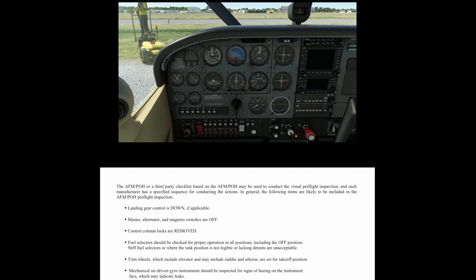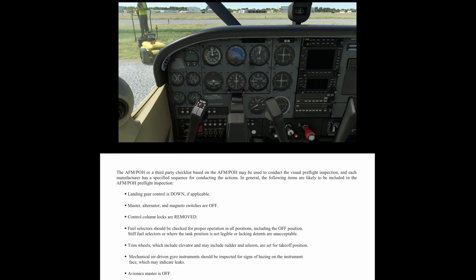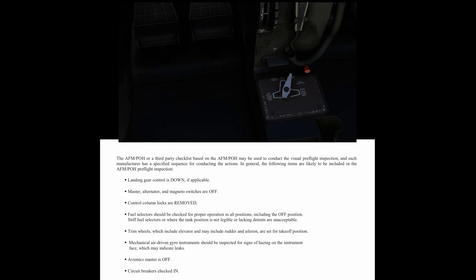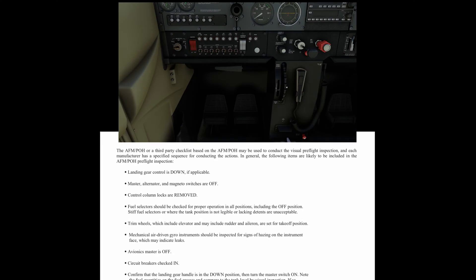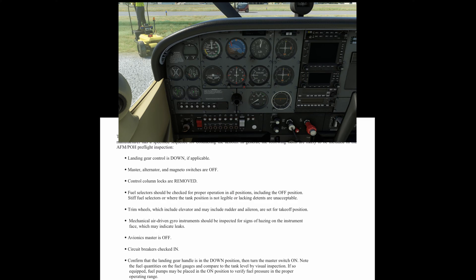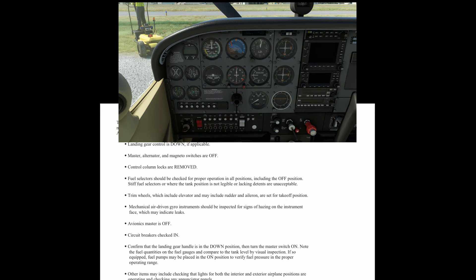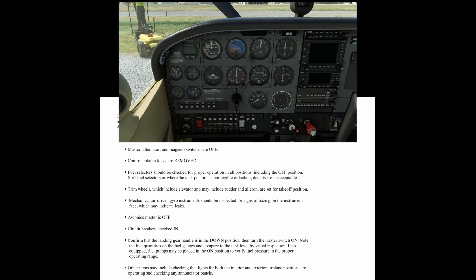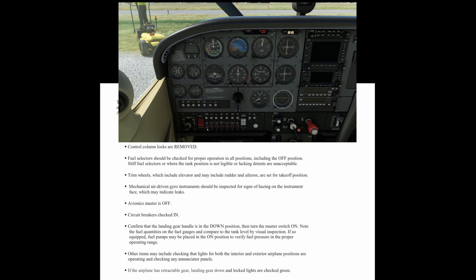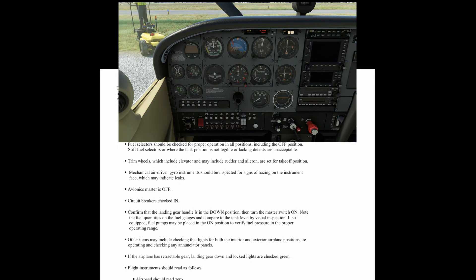In general, the following items are likely to be included in the AFM/POH pre-flight inspection: Landing gear control is down, if applicable. Master, alternator, and magneto switches are off. Control column locks are removed. Fuel selectors should be checked for proper operation in all positions, including the off position. Stiff fuel selectors, or where the tank position is not legible or lacking detents, are unacceptable. Trim wheels, which include elevator and may include rudder and aileron, are set for take-off position. Mechanical, air-driven gyro systems should be inspected for signs of hazing on the instrument face, which may indicate leaks. Avionics master is off. Circuit breakers checked in. Confirm that the landing gear handle is in the down position and then turn the master switch on. Note the fuel quantities on the fuel gauges and compare to the tank level by visual inspection. Fuel pumps may be placed in the on position to verify fuel pressure in the proper operating range.